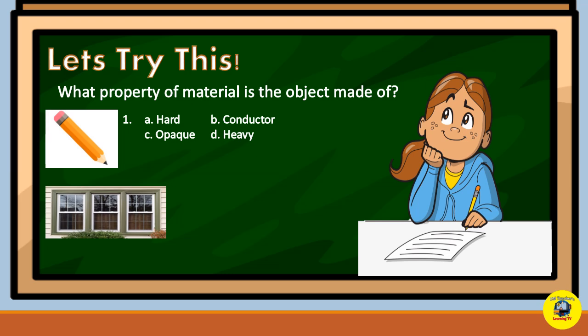How about the second picture? It's a window. What property of material is the object made of? Is it hard, shiny, opaque, or conductor? Is it transparent, brittle, translucent, or hard?